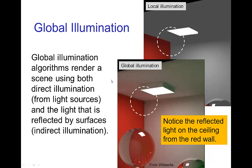There's a class of algorithms in computer graphics known as global illumination, and they include both direct illumination from light sources and also light reflected by surfaces, this kind of reflected light, this indirect illumination that we've been talking about.